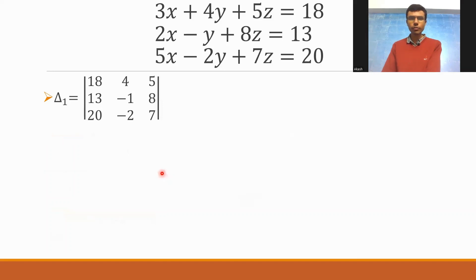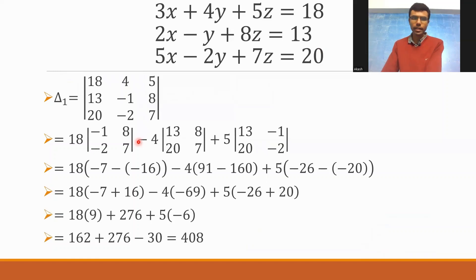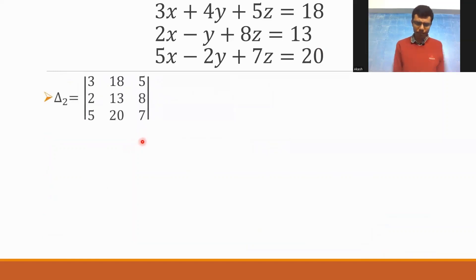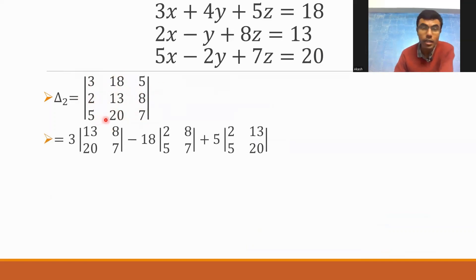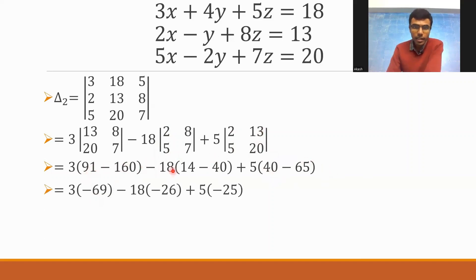For delta 2, replace the second column of delta with the elements of D — 18, 13, 20. Expanding: 3 into det[13, 8; 20, 7], minus 18 into det[2, 8; 5, 7], plus 5 into det[2, 13; 5, 20]. This gives 3×(91 - 160), minus 18×(14 - 40), plus 5×(40 - 65). That is 3×(-69), minus 18×(-26), plus 5×(-25).